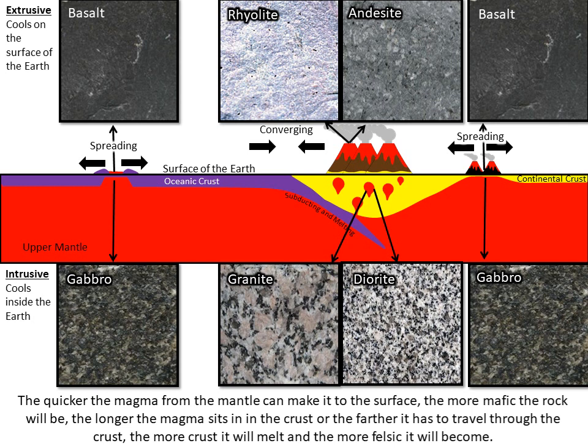The longer it takes for the mafic magma to make its way to the surface or start to cool, the more felsic it will become. The magma will melt the more felsic crust that it is moving through, and that melted felsic material will mix with the mafic magma, making the magma more and more felsic. It is in these zones you can expect to find andesites and rhyolites erupted onto the surface, or diorites and granites cooled underground.